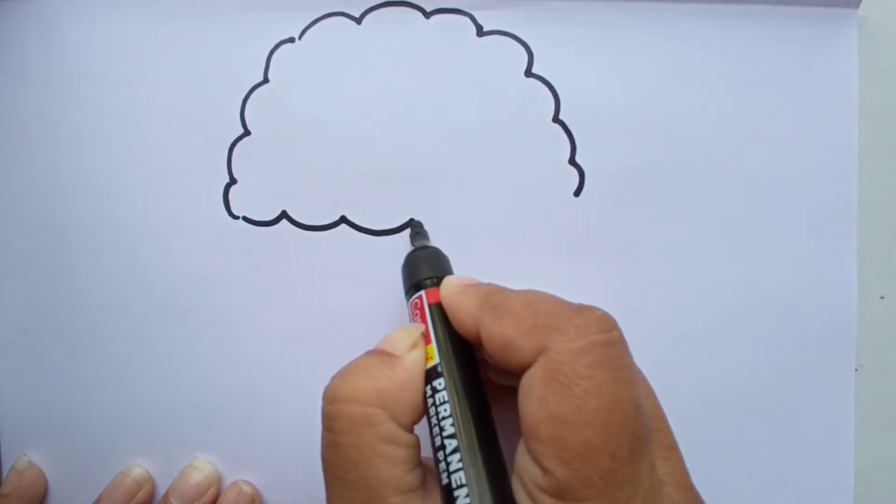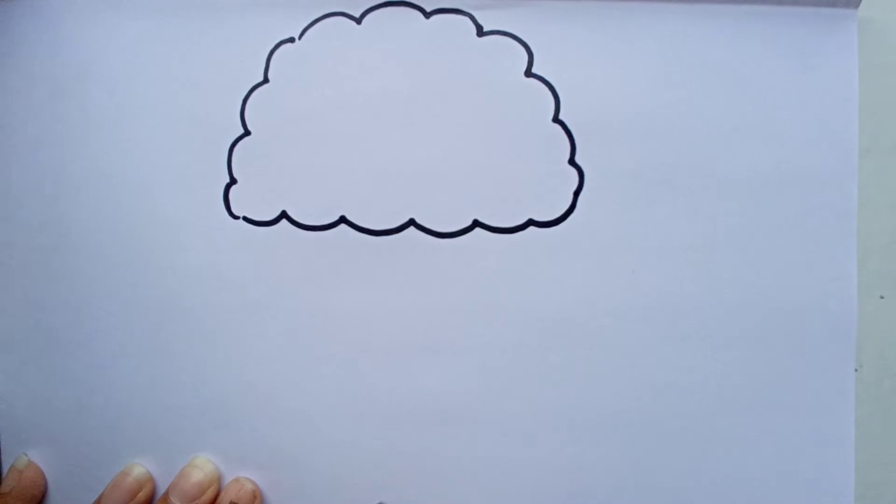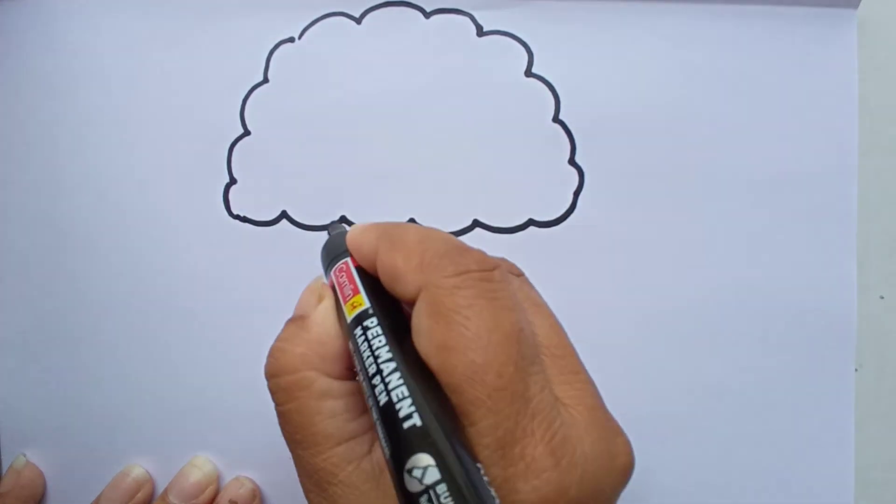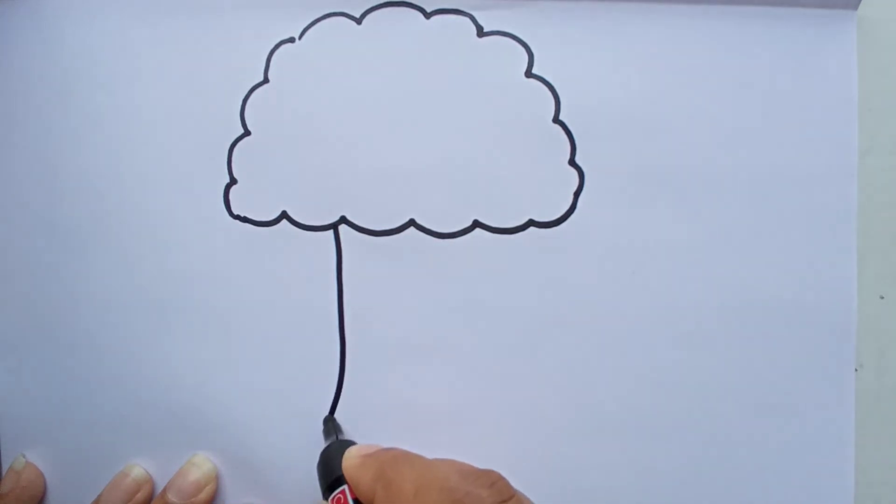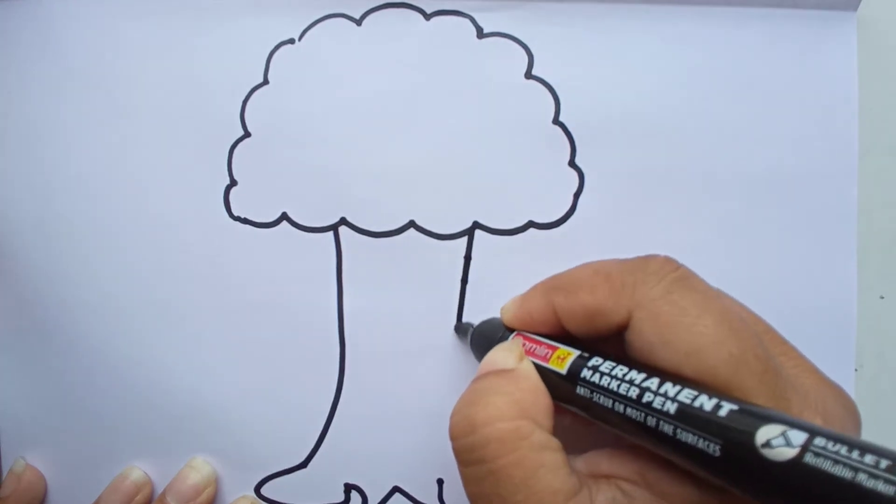So I'm going to draw a tree. This is a tree, and now I will draw the trunk of the tree. And this is the trunk.